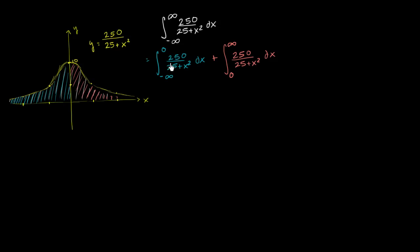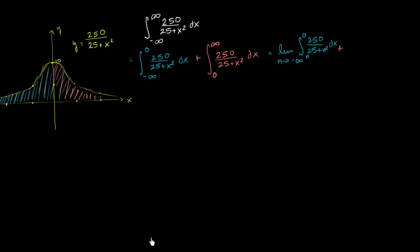Now we can start to make sense of this. What we have in blue can be rewritten as the limit as n approaches negative infinity of the definite integral from n to 0 of 250 over 25 plus x squared dx, plus the limit as m approaches positive infinity of the definite integral from 0 to m of 250 over 25 plus x squared dx.